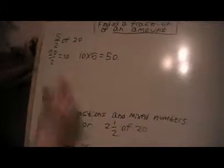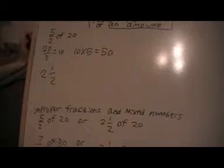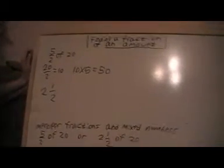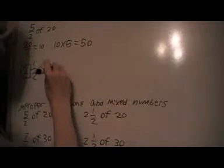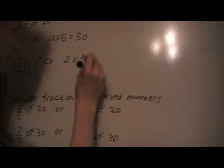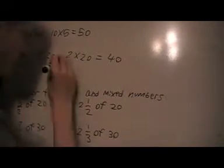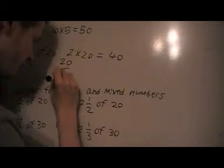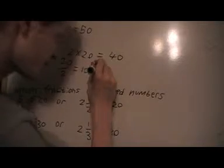Now if you want to change that to 2 and a half, what you would do here is you would multiply this number here out in front by the amount here. So I do 2 times 20. And then I divide 20 by 2 and get 10. And I add these two up.